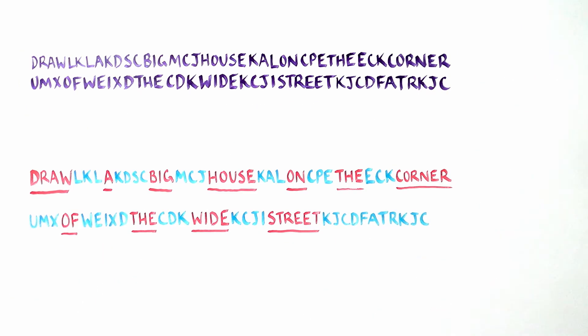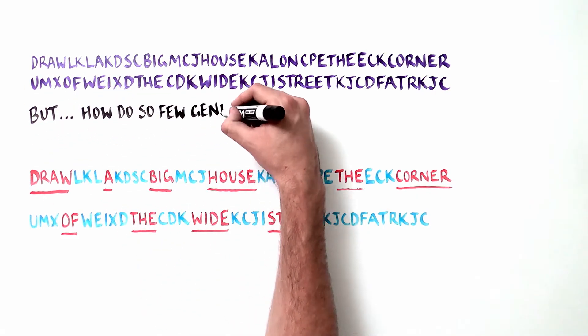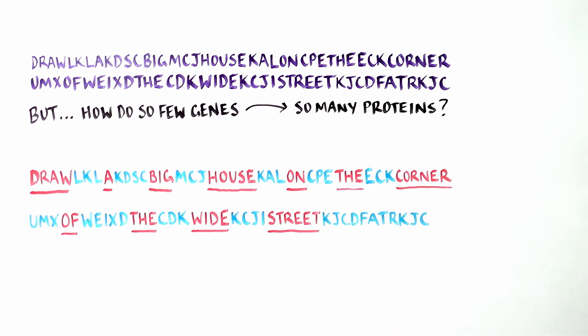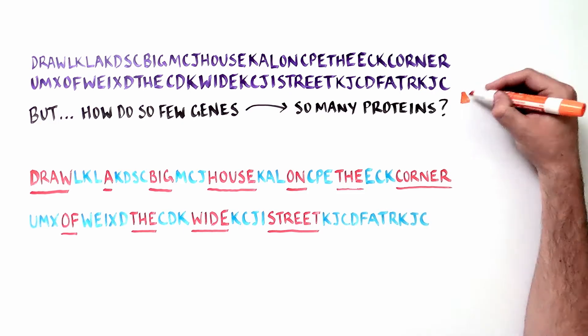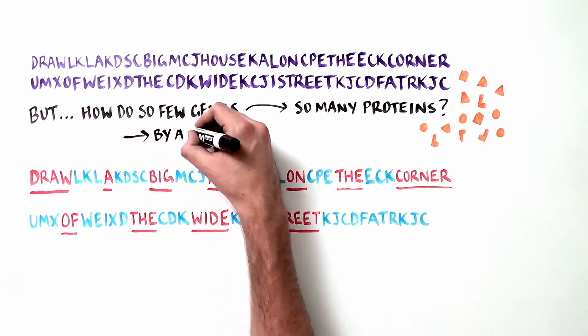Now that we understand how proteins are made from DNA and RNA, let's get back to our original question. How do so few genes produce so many different proteins? The answer is by alternative splicing of a gene's RNA message.